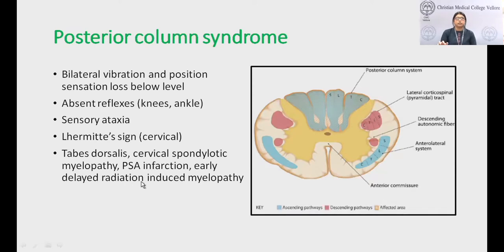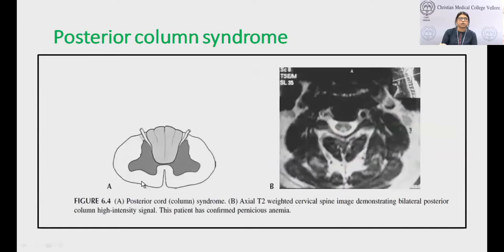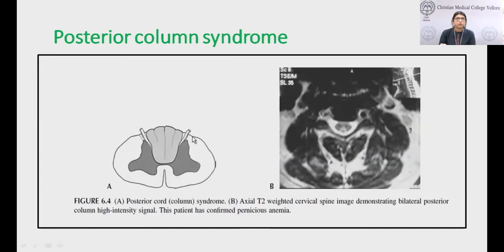Classical examples of posterior column syndrome include posterior spinal artery infarction, early delayed radiation-induced myelopathy, and in vitamin B12 deficiency, early involvement of the posterior column followed by lateral column involvement — together called subacute combined degeneration.